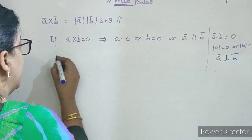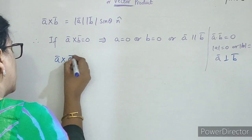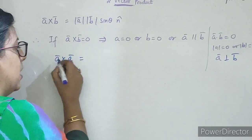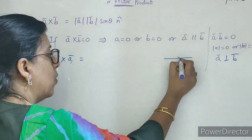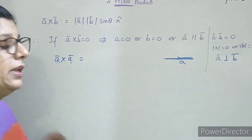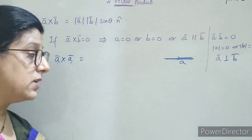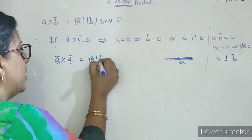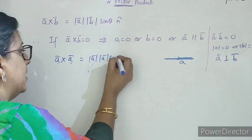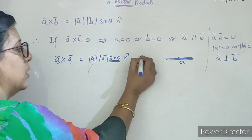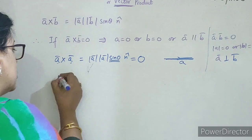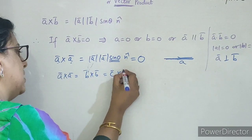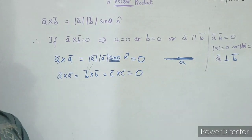Ab hum result nikalenge. What is A cross A? A cross A kya hoga? A cross A matlab collinear vector. Inke beech mein bhi angle kitna hoga? Zero. To A cross A kya ho jayega? Zero — kyunki mod A, mod A, sin zero, n̂ — aur sin zero zero hota hai, isliye zero. So A cross A, B cross B, C cross C — sab kuch zero. Similarly î×î = ĵ×ĵ = k̂×k̂ = zero, kyunki î aur î ke beech mein angle zero hai.